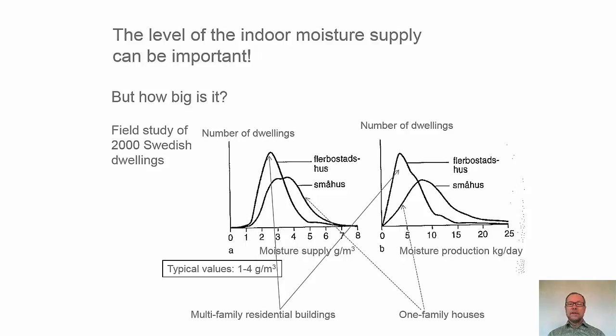There have been several investigations both in Sweden and other countries. Here are some results from single family houses and multi-family houses. And we find typically that the moisture supply is in the range of 1 to 4 grams per cubic meter.